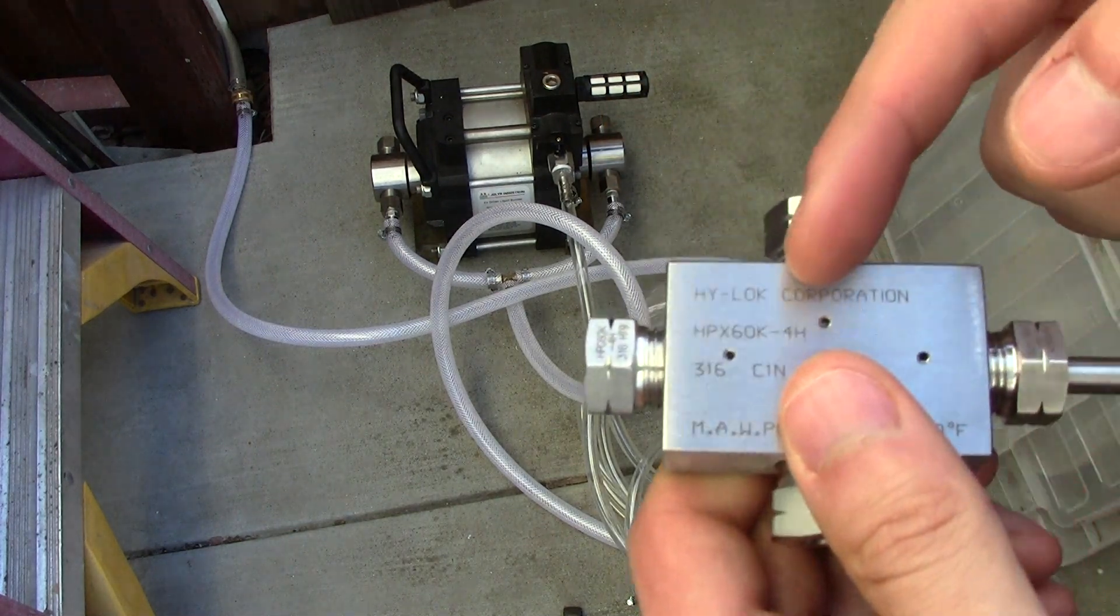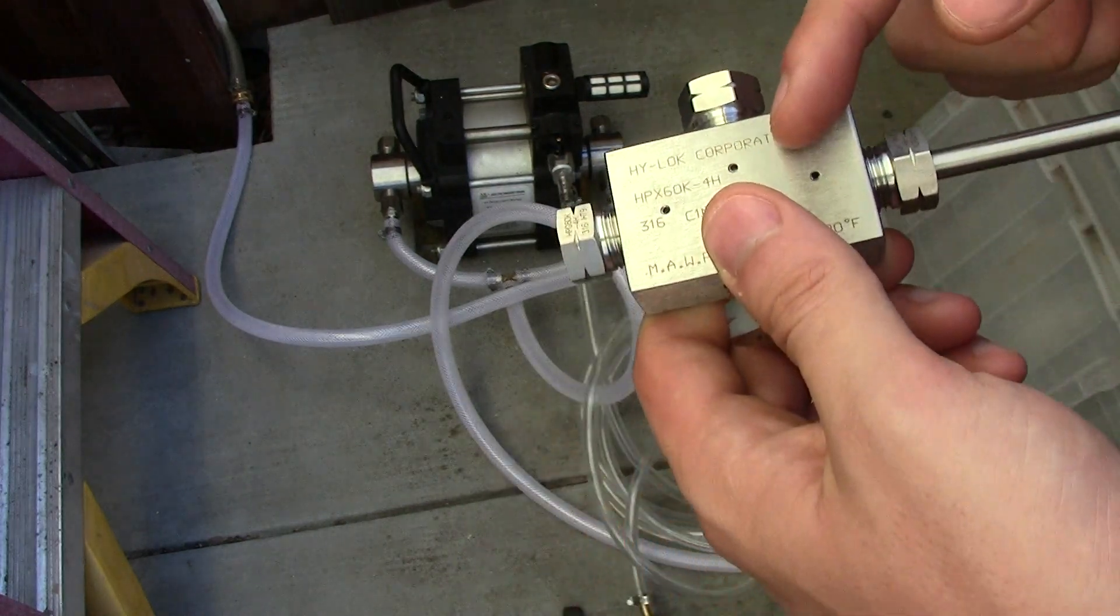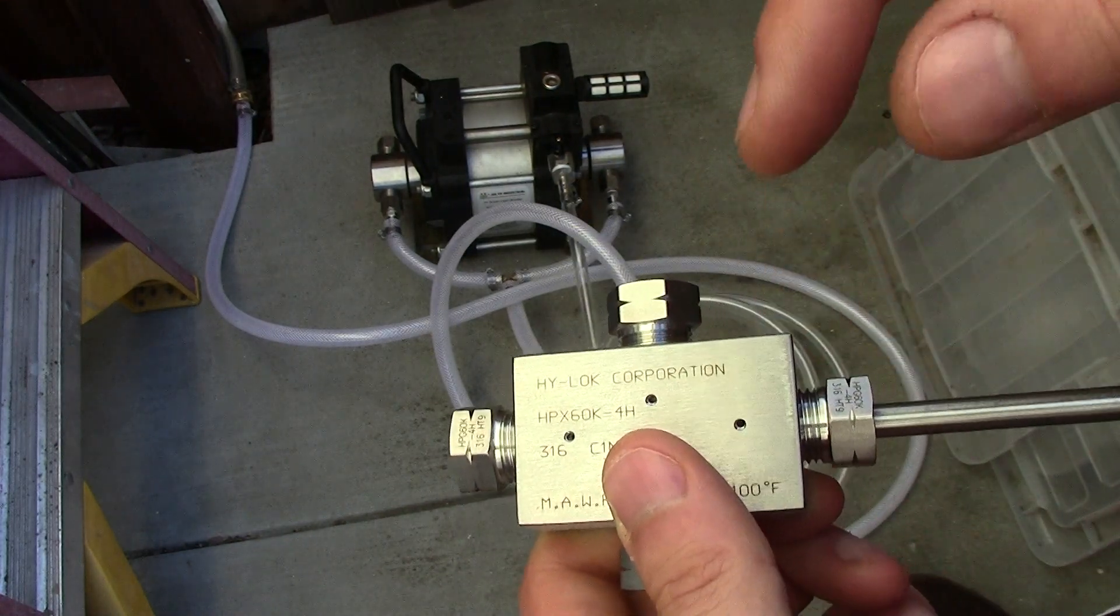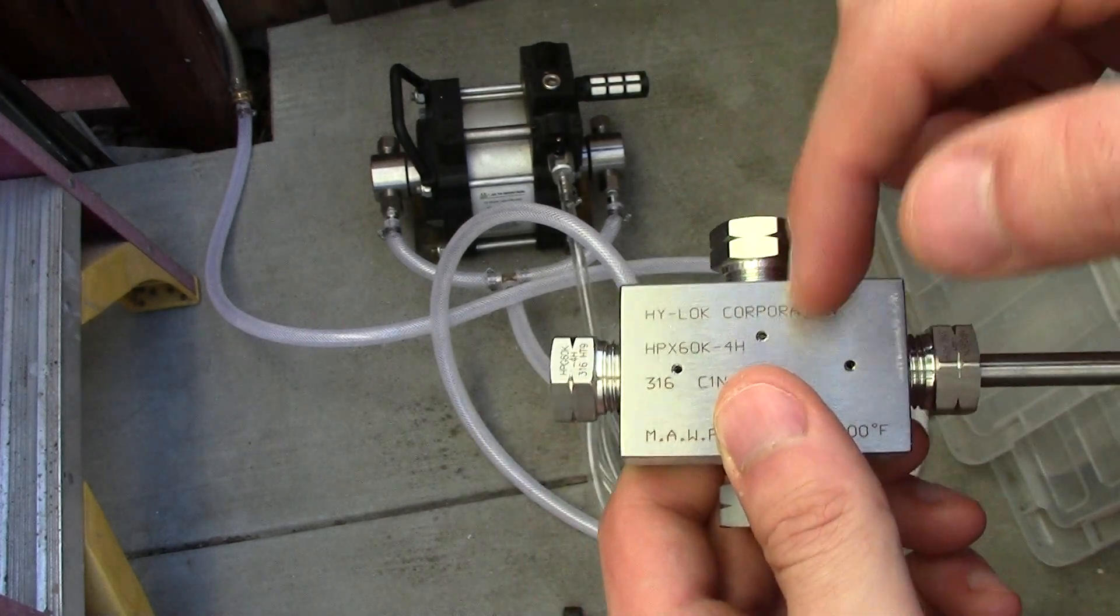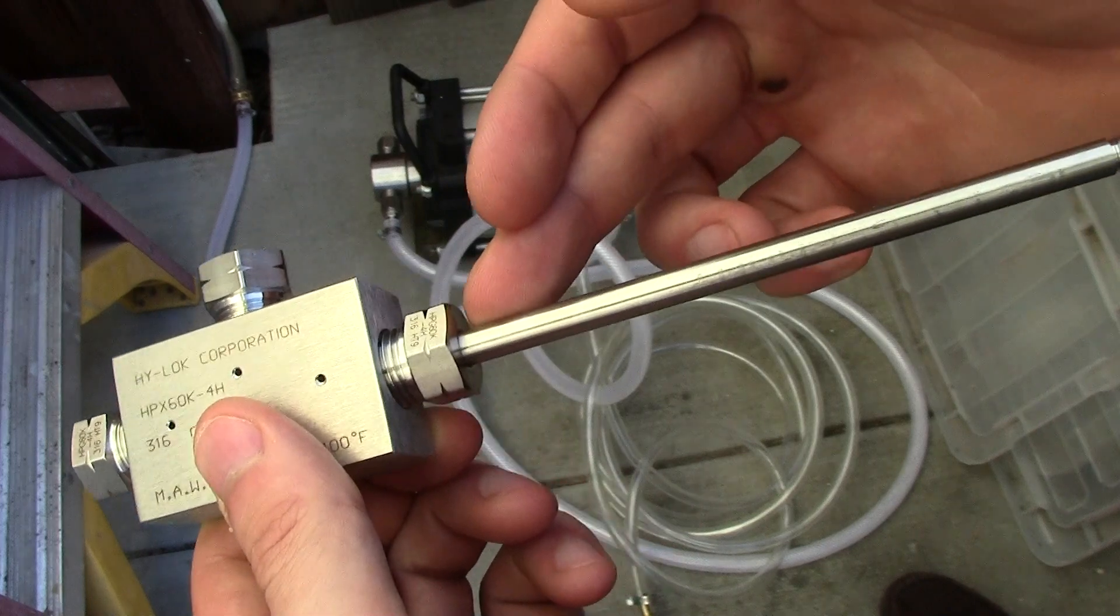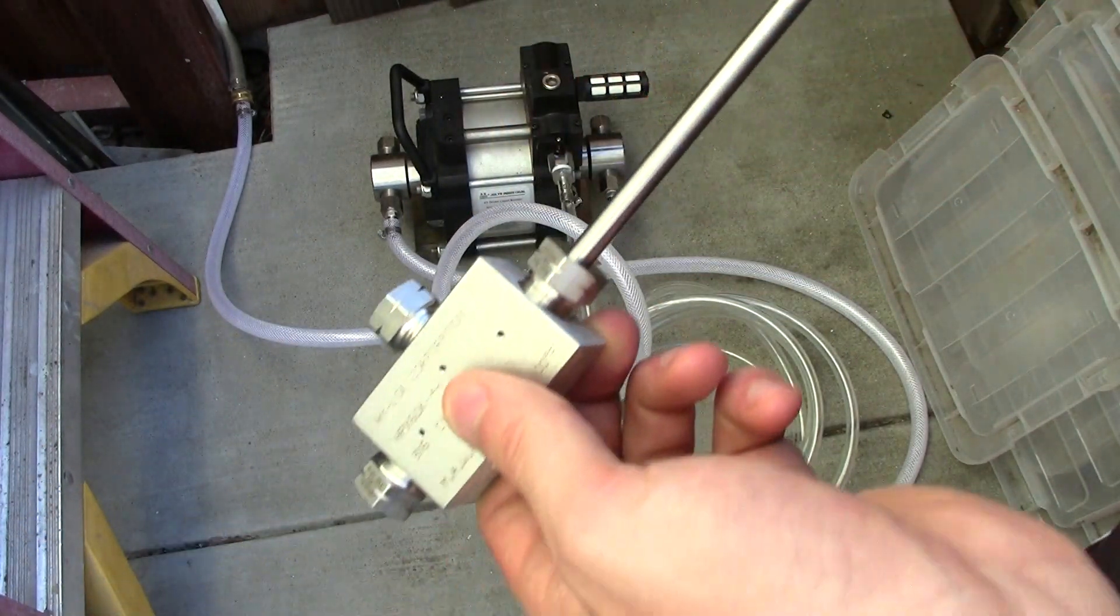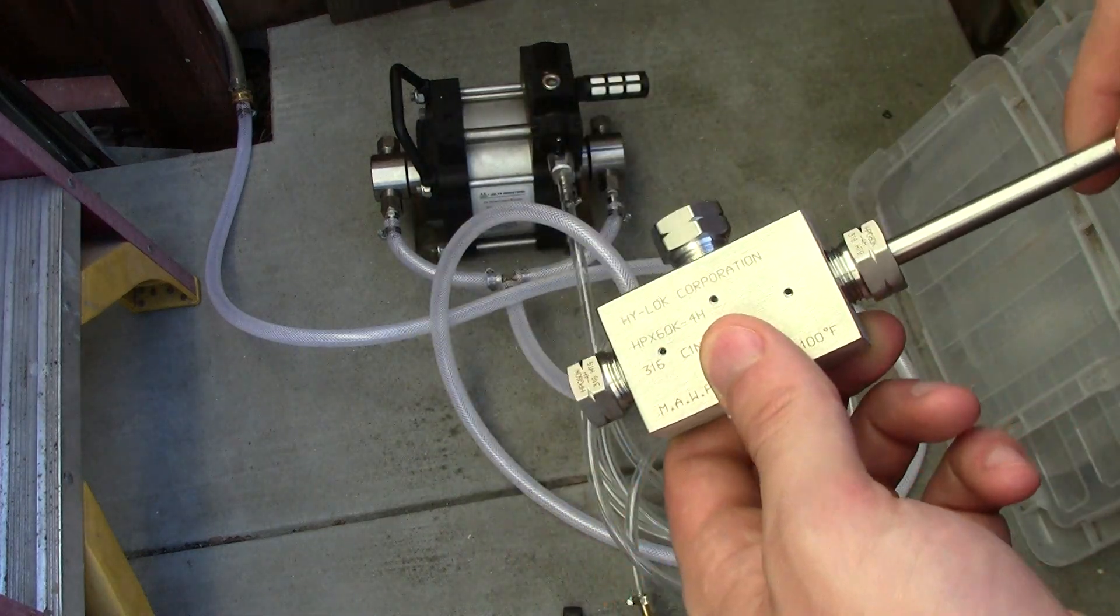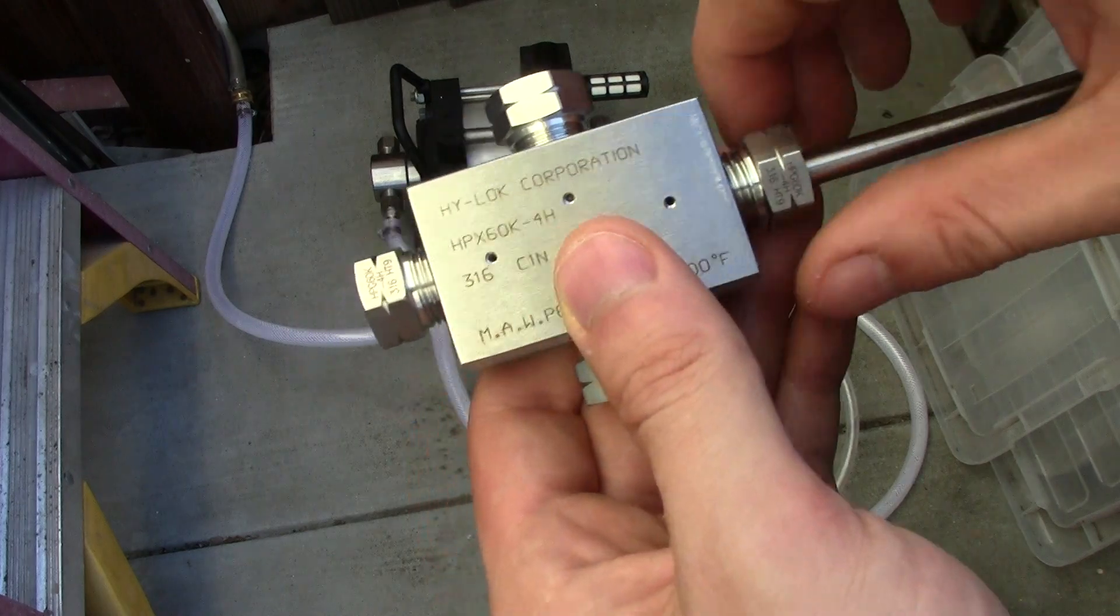You can buy this stuff from Parker, high pressure equipment HPE, Swage Lock, all kinds of companies sell this kind of stuff. Generally you have the variances in the nipple size. You have a quarter-inch nipple, you have a three-eighths nipple, and you have an eighth-inch nipple. I think those are mainly the ones that you have to pick from.